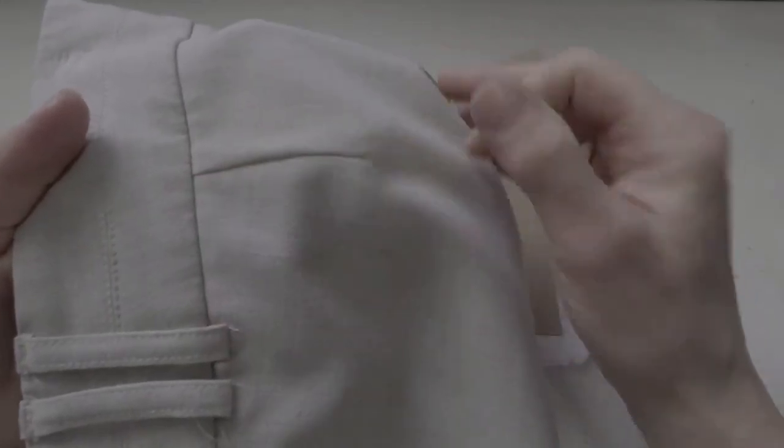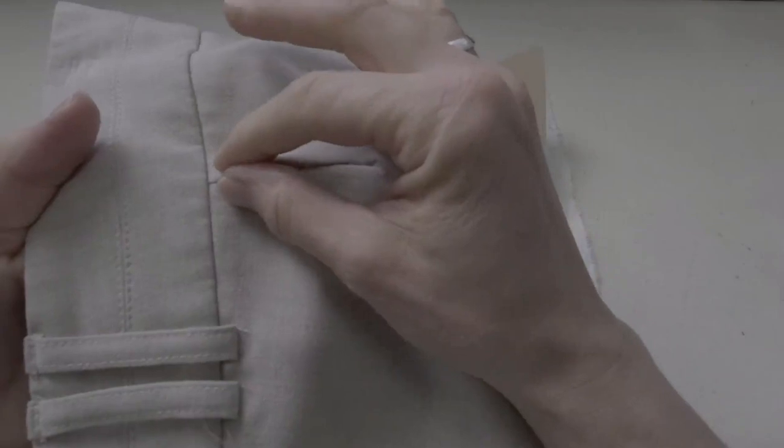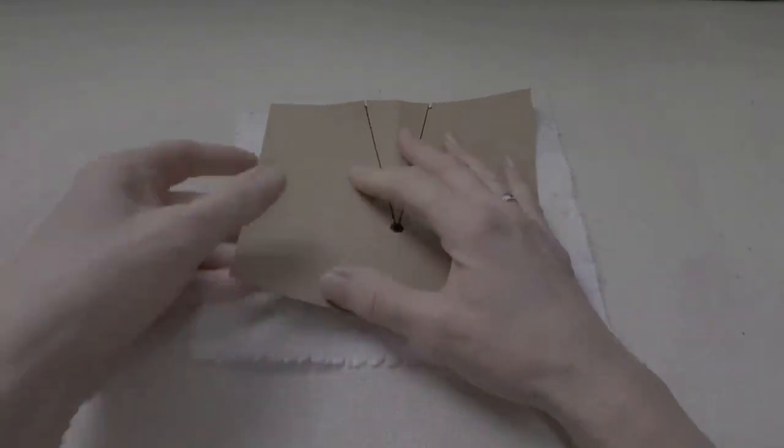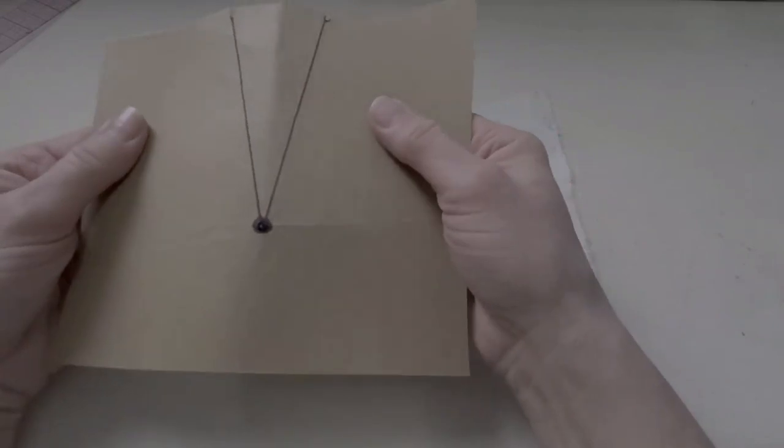A dart in a garment is simply a way of removing some of the fabric to be able to create shape in a garment so that it fits around the body. So a dart can take a two-dimensional thing like fabric and turn it into something that's three-dimensional.